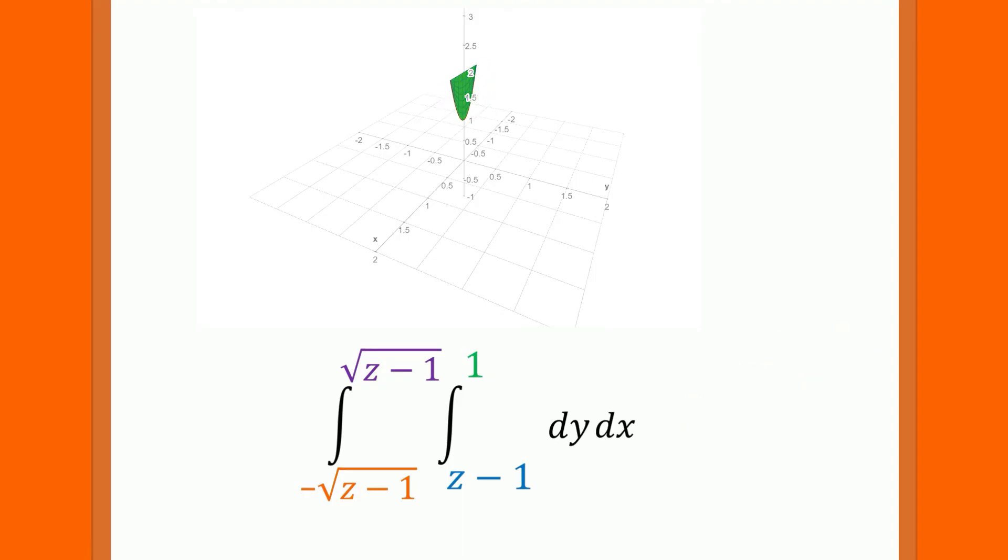We now collapse in the x direction. This leaves us with a thin line segment along the z axis. As we move through this region, again in the z direction, we have to enter at z equals 1 and exit at z equals 2. These are the remaining bounds of our triple integral.